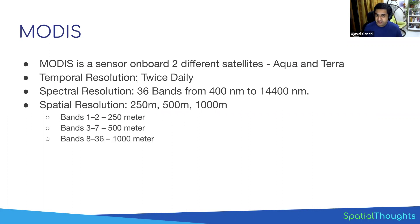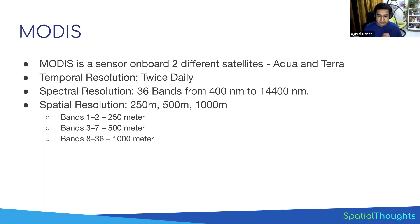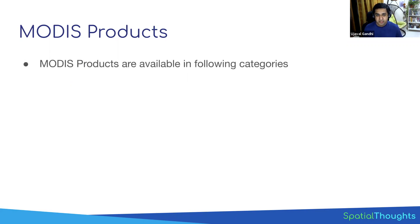Specifically for NDVI, bands one and two — the 250-meter bands — are the red and near-infrared bands. That's why you are able to get NDVI values using these two bands at 250-meter resolution. The great thing about MODIS is that not only do you get access to the raw scenes, but also a whole bunch of derived scientific products.